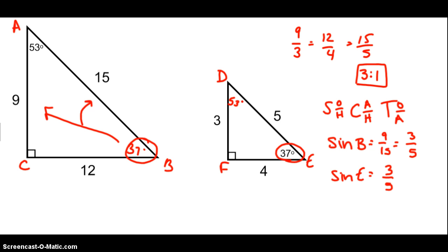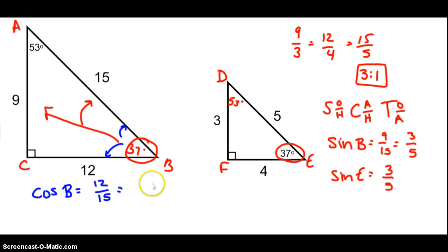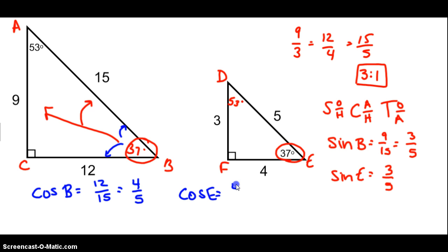Now let's look at the cosine of B. The cosine of B would be the adjacent over the hypotenuse: 12 over 15, which reduces to 4 over 5. And the cosine of E is also adjacent over hypotenuse: 4 over 5. You can see that those ratios are the same.